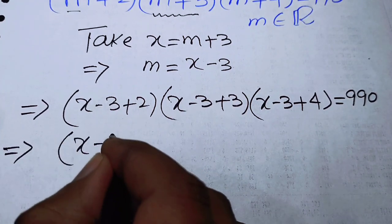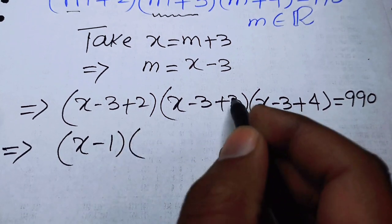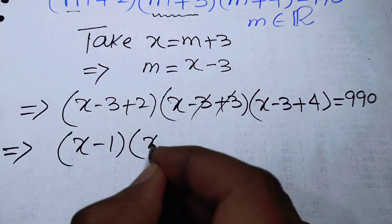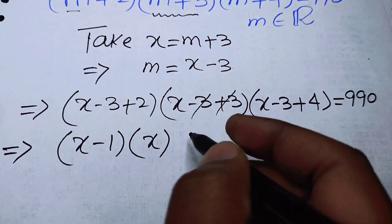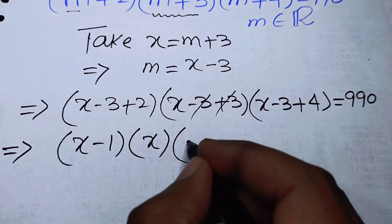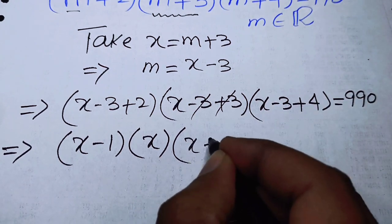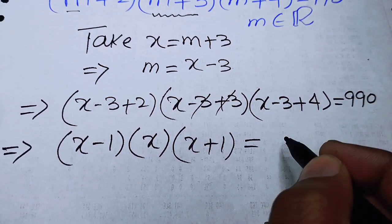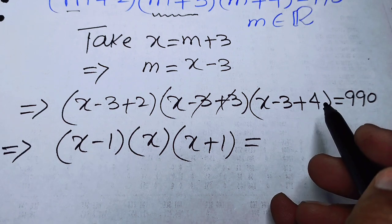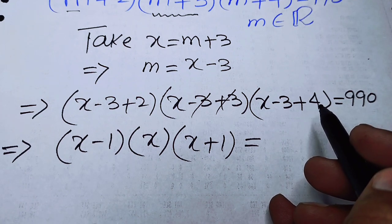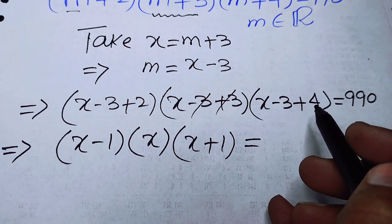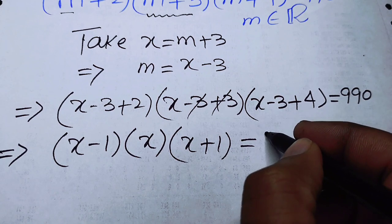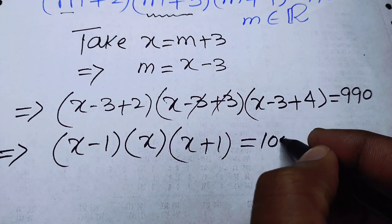After simplification we obtain (x minus 1)(x)(x plus 1) is equal to 990.